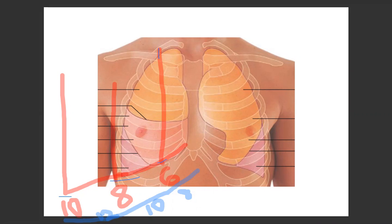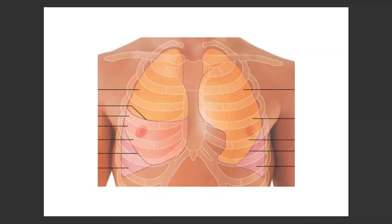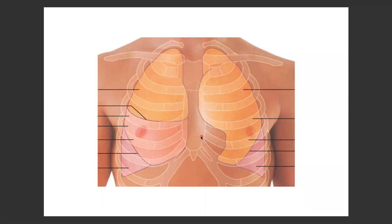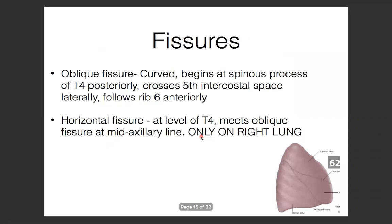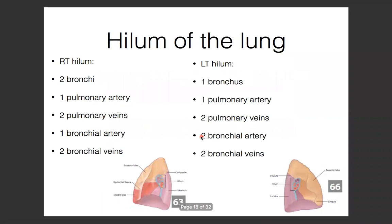The typical question is: if someone got stabbed at a certain level, would you expect to find the lung there? Sometimes asked directly, but usually as a clinical scenario. Posteriorly near the vertebral column, the lung reaches up to the level of the 10th rib.